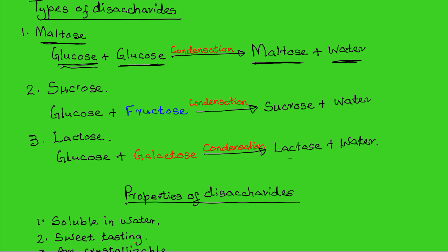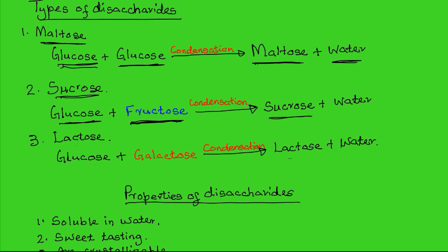The second type of disaccharide is sucrose, which is formed from the condensation of one glucose and one fructose. Fructose is the fruit and vegetable monosaccharide. The two combined form a sucrose molecule with the loss of a water molecule. Sucrose is also known as cane sugar and is found in fruits and vegetables.